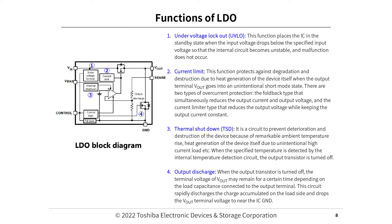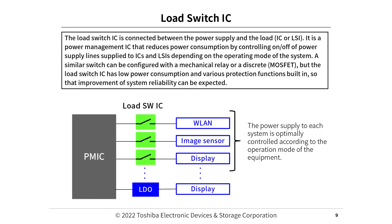(3) Thermal shutdown (TSD) - a circuit to prevent deterioration and destruction of the device due to remarkable ambient temperature rise or heat generation from unintentional high current load. When the specified temperature is detected by the internal temperature detection circuit, the output transistor is turned off. (4) Output discharge - when the output transistor is turned off, the terminal voltage of Vout may remain for a time depending on the load capacitance. This circuit rapidly discharges the charge accumulated on the load side and drops the Vout terminal voltage to near IC ground.